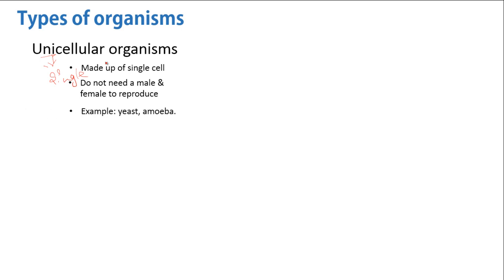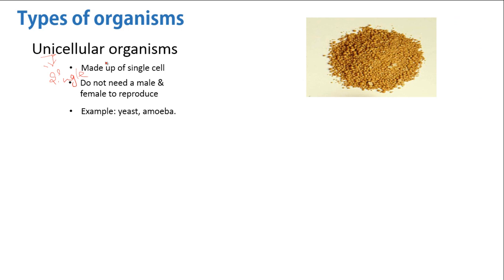Let's study types of organisms. The first one is unicellular organisms. What is unicellular? Uni means single. These organisms are made up of single cells. They do not need a male and female to reproduce. For example, yeast and amoeba. This is an example of yeast.